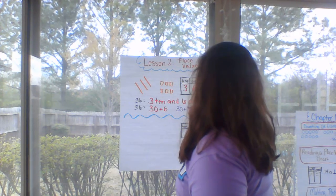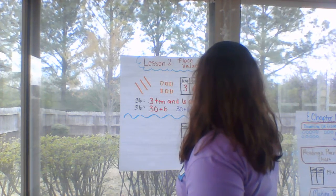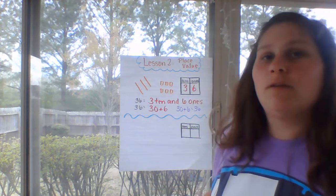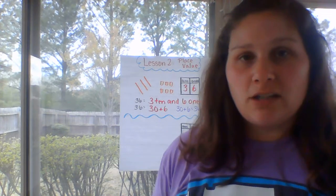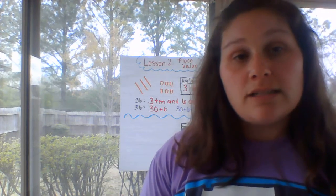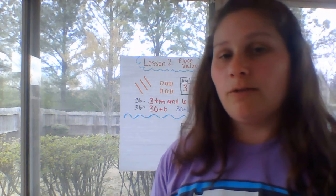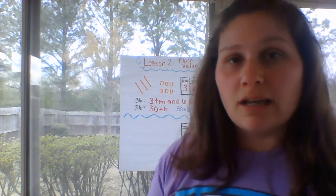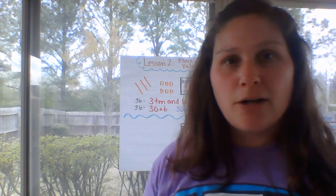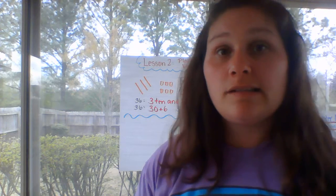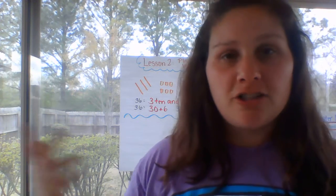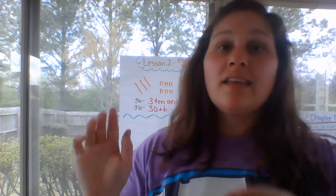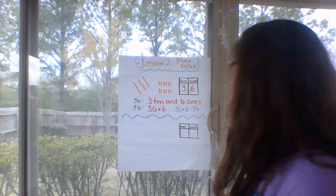This is called expanded form: 30 plus 6 equals 36. They're teaching you expanded form, and what they'll do in second grade is label it as such. You're getting an early introduction — that's just expanding the value of a number by tens and ones, and when you get into larger numbers, by hundreds, tens, and ones, and so forth.